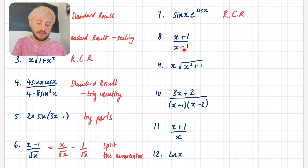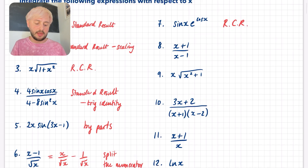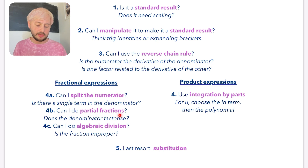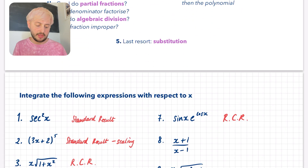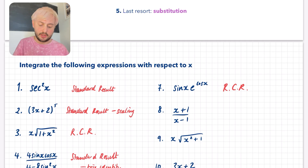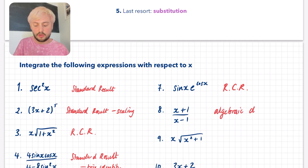Number 8 is definitely going to be in the fractional expressions section. It doesn't look like I can split the numerator and it doesn't look like I can do partial fractions. Because the fraction is improper — the numerator has degree one and the denominator has degree one — I would do algebraic division on this one, and then may need to apply some other techniques afterwards.